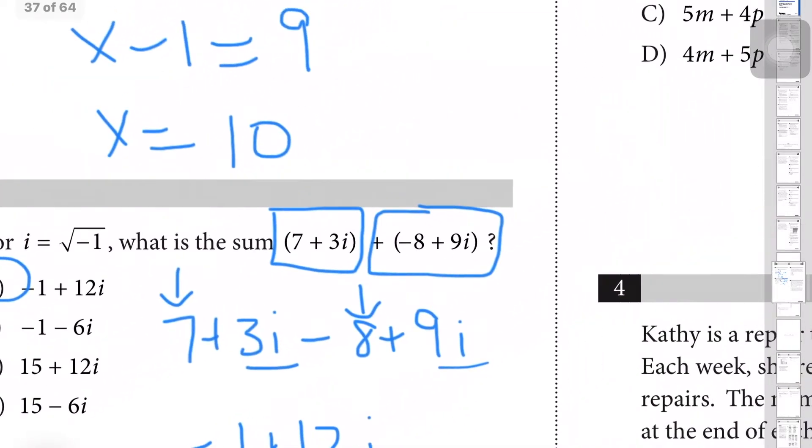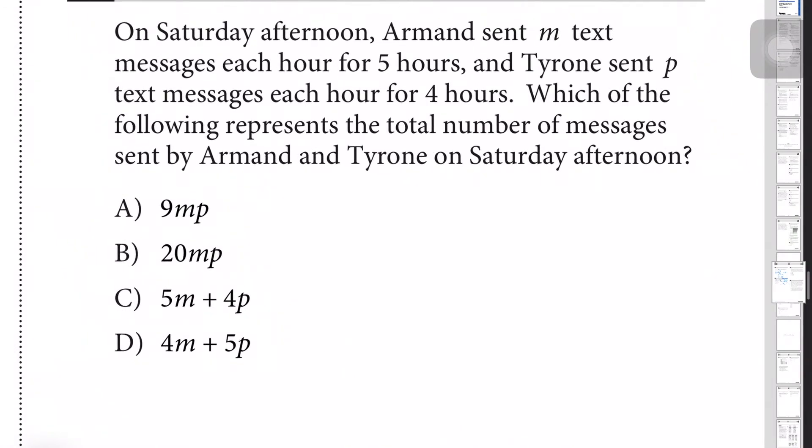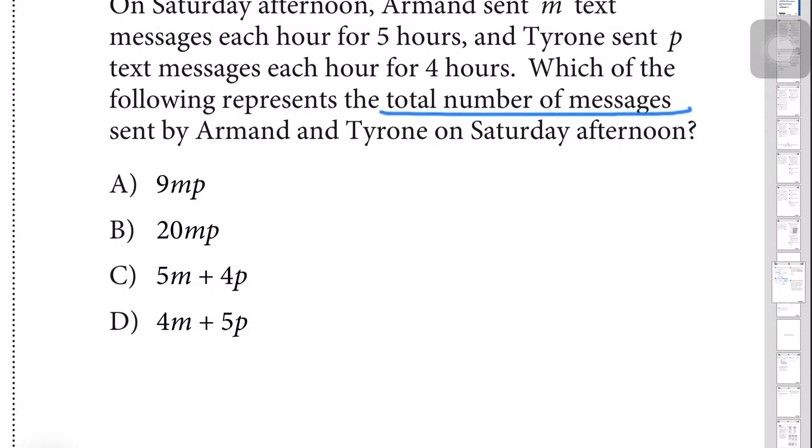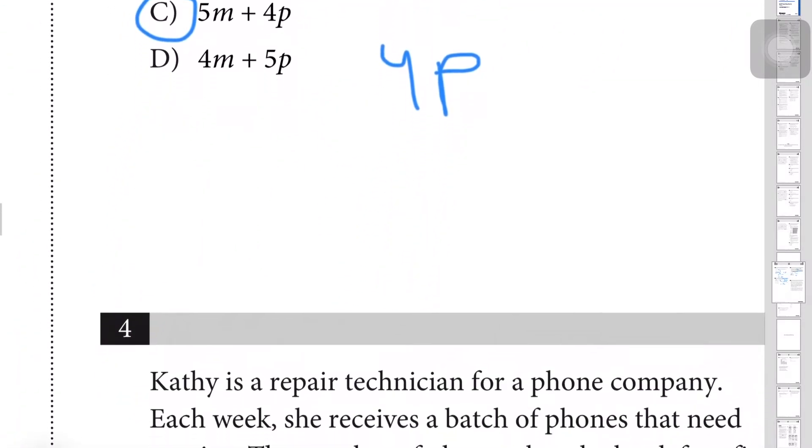Let's move to question number 3. On Saturday afternoon, Armand sent m text messages each hour for 5 hours, and Tyrone sent p text messages each hour for 4 hours. Which of the following represents the total number of messages sent by Armand and Tyrone on Saturday afternoon? We're looking for the total number of messages. For Armand, he sent m each hour for 5 hours, so his total would be 5m. Tyrone sent p text messages each hour for 4 hours, so his would be 4p. To find the total, you simply add these up, so it's 5m + 4p, which would be C.